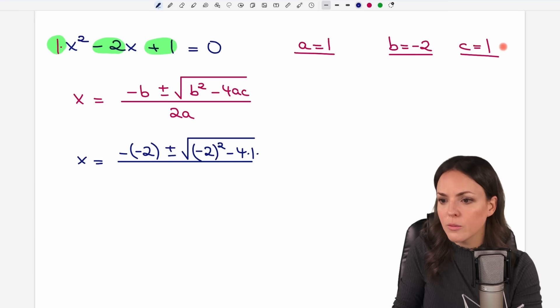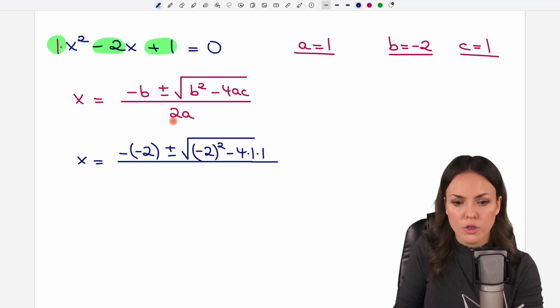c equals 1. And then in the denominator 2 times my a was 1. Let's calculate this.